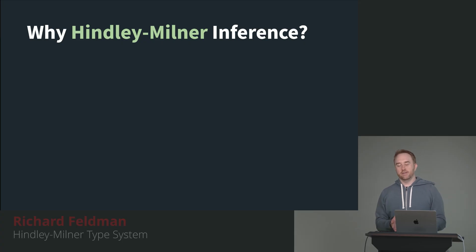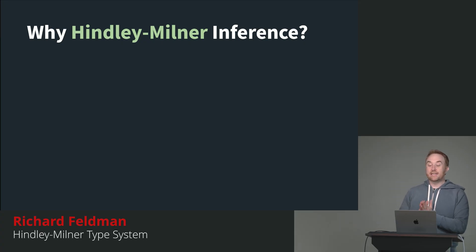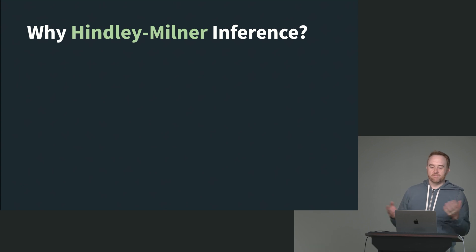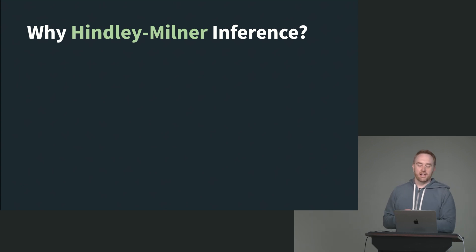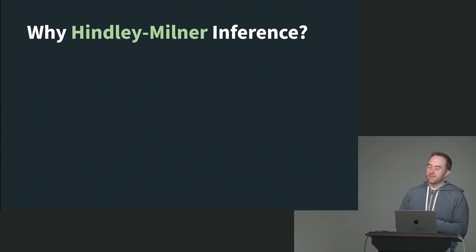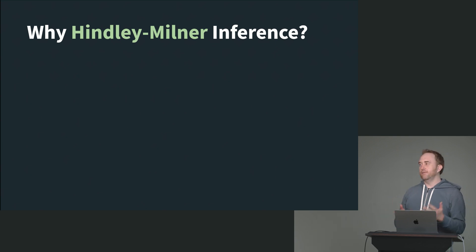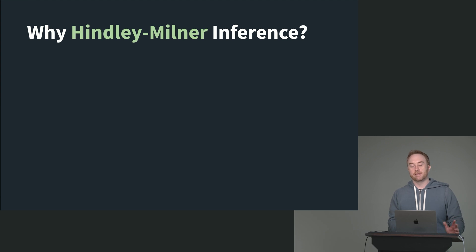I mentioned at the beginning of the workshop that we are doing Hindley-Milner type inference. This is named after two famous computer scientists, Hindley and Milner. Robin Milner is famous for all sorts of things; Hindley is mainly just famous for this algorithm. You might also see Damas-Hindley-Milner, or DM for short, because Damas got involved later — but the most common way people refer to this style of type checking is just Hindley-Milner.